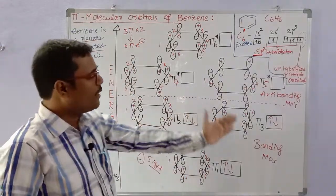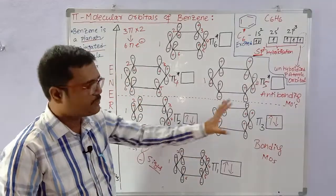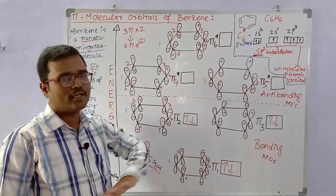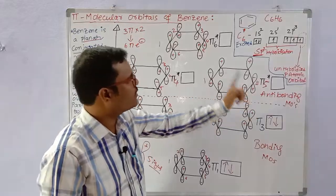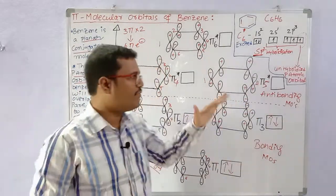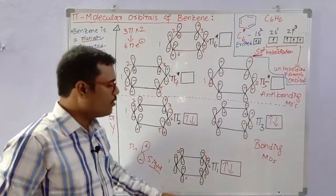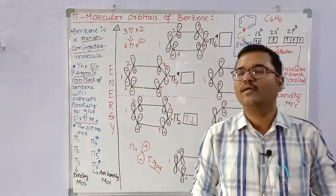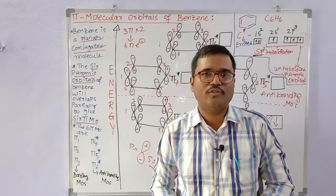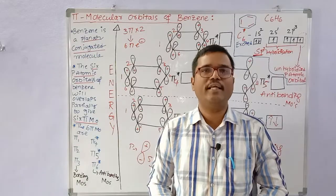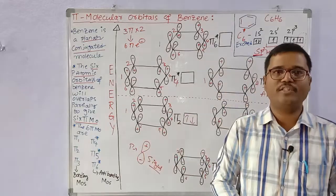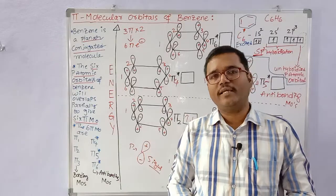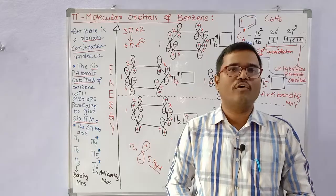So in pi1, pi2, and pi3 bonding molecular orbitals, 6 pi electrons are filled: 2 electrons in pi1, 2 electrons in pi2, and 2 electrons in pi3 — that is 2 × 3 = 6 electrons. Pi4*, pi5*, and pi6* anti-bonding molecular orbitals remain empty as they have high energy. Thank you for watching this video.